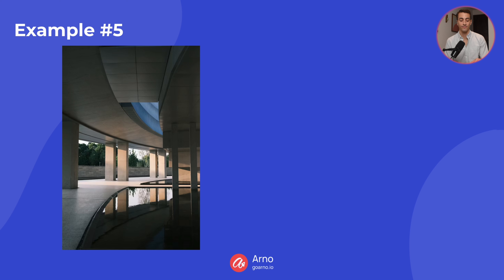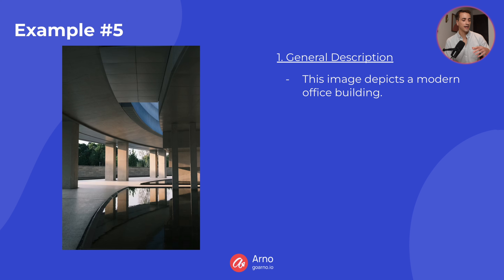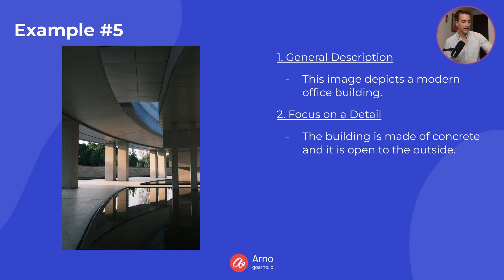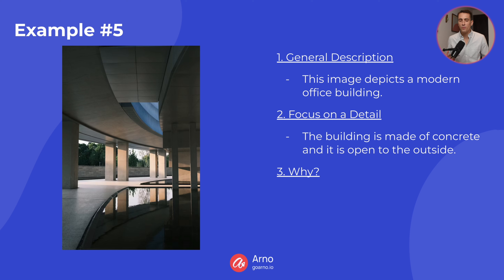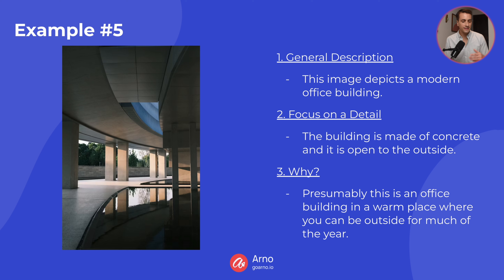Number five — general description: this image depicts a modern office building. Focus on a detail: the building is made of concrete and it is open to the outside. And why? I was wondering why it is open to the outside, which led me to say: presumably this is an office building in a warm place where you can be outside for much of the year.